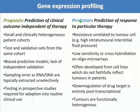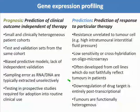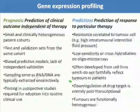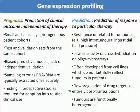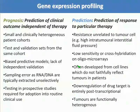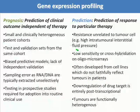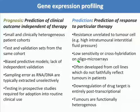When using gene signatures to predict response to a particular therapy, we need to be aware that resistance can be unrelated to the tumor cell. We can be dealing with low sensitivity or cross-hybridization on oligomicroarrays. Often gene signatures are derived from cancer cell lines which do not necessarily faithfully reflect tumors in patients, and the drug target can be downregulated post-transcriptionally, which won't be picked up by this technology. Tumors are functionally heterogeneous, so resistance to a therapy can come from a very small subpopulation of tumor cells not detected by this technology. Therefore, molecular diagnostics and genome-wide analyses have not yet found their way into routine clinical practice.